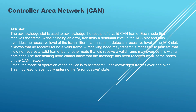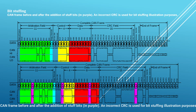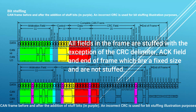First, ACK slot: the acknowledged slot is used to acknowledge the receipt of a valid CAN frame. Each node that receives the frame without finding an error transmits a dominant level in the ACK slot, thus overriding the recessive level of the transmitter. Second, interframe spacing: data frames and remote frames are separated from preceding frames by a bit field called interframe space, which consists of at least three consecutive recessive bits. Lastly, bit stuffing: used to ensure enough transitions to maintain synchronization. A bit of opposite polarity is inserted after five consecutive bits of the same polarity. This is called bit stuffing and is necessary due to the non-return to zero, NRZ, coding used with CAN. The stuffed data frames are de-stuffed by the receiver. All fields in the frame are stuffed, with the exception of the CRC delimiter, ACK field, and end of frame, which are fixed size and are not stuffed.